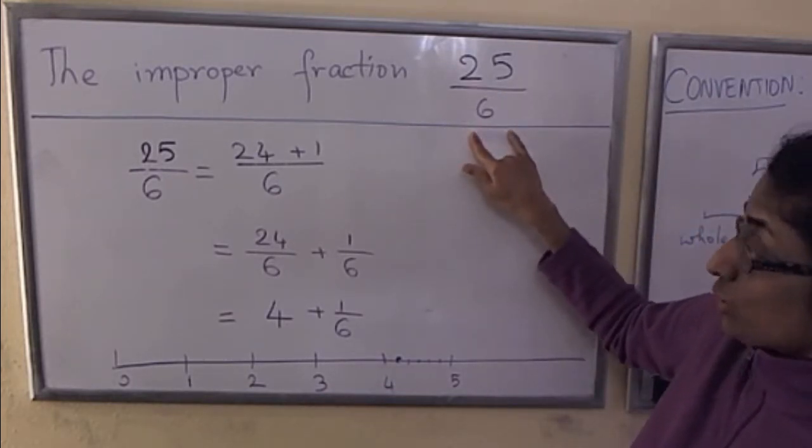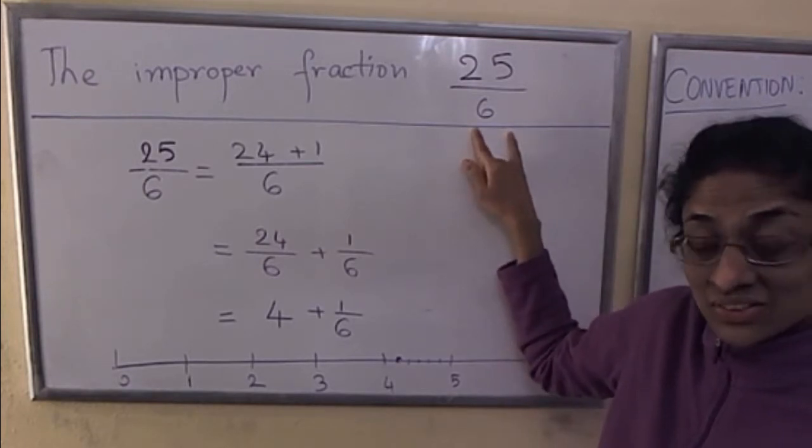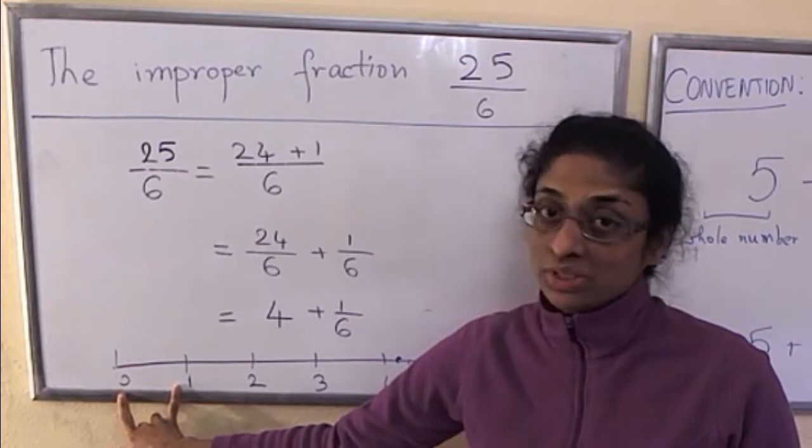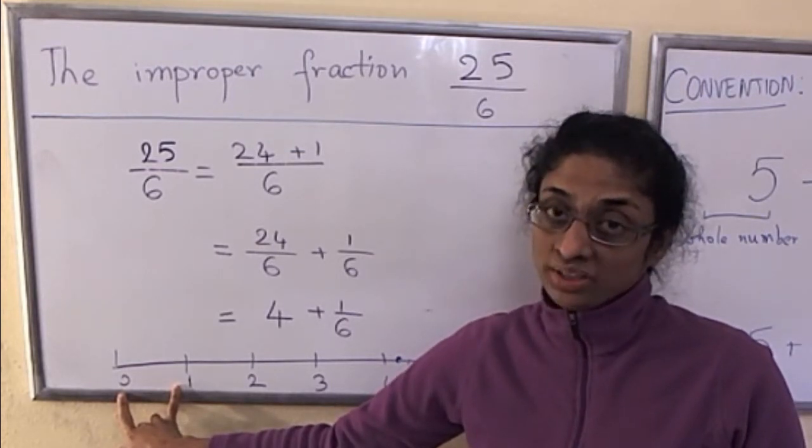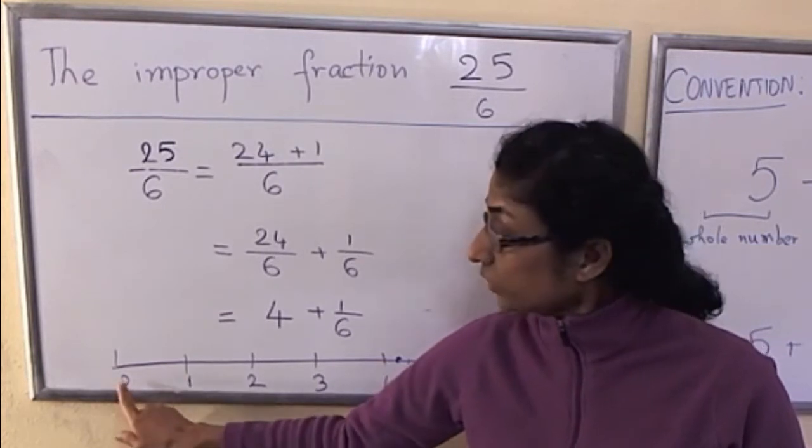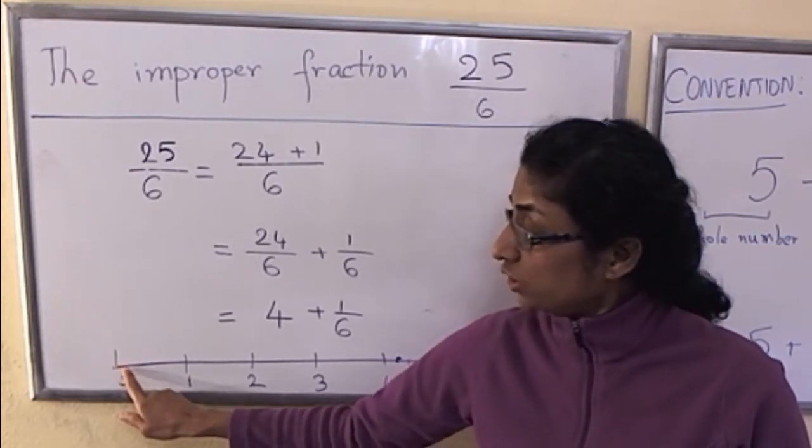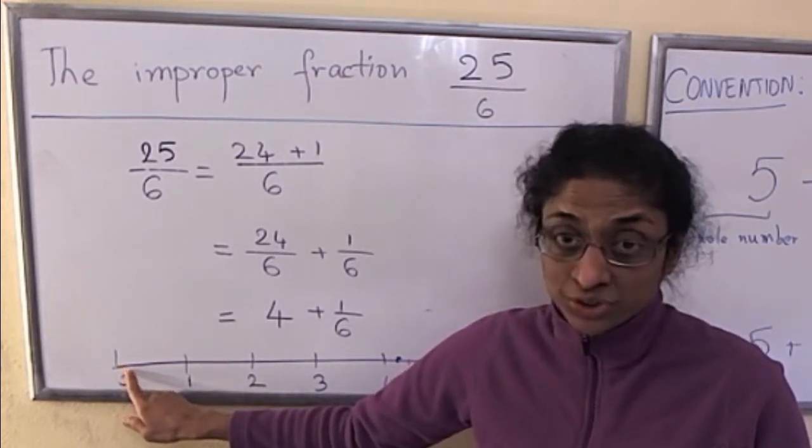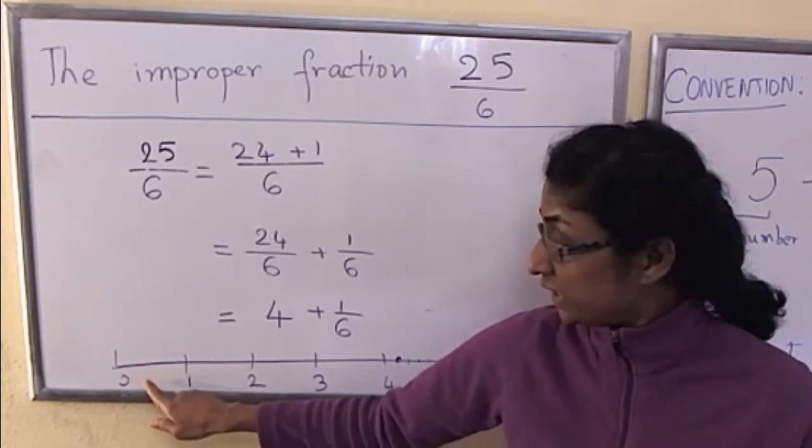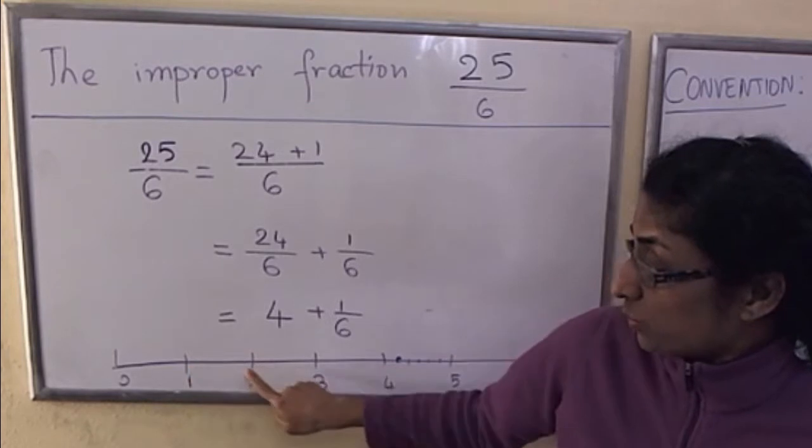Well, 25 over 6 is 25 copies of 1 sixth, so if we cut up the unit segment from 0 to 1 into 6 pieces of equal length, the first tick mark to the right would be 1 over 6. Counting multiples of 1 over 6, 6 over 6 would be this point.